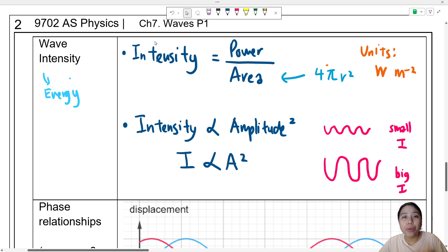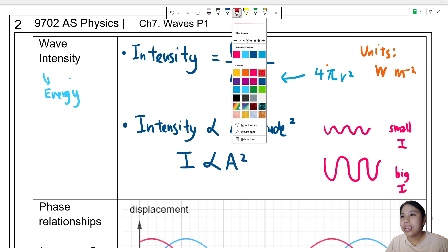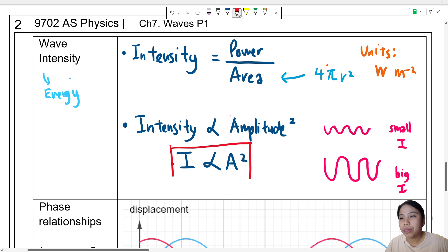But yes, in conclusion, for wave intensity, make sure you know the general definition, which is power per unit area for a wave. And more specifically, that we'll use more often in calculations, that will be your intensity proportional to amplitude squared. That's all for this section. I'll see you in the next video.